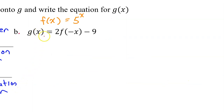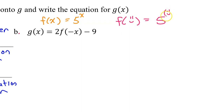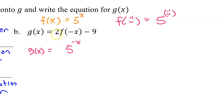Part B: g of x equals 2 times f at negative x minus 9. Remember, f of x equals 5 to the x power, so f at smiley face equals 5 to the smiley face power. Therefore, f at negative x will be 5 to the negative x power. Bringing down the rest of g of x, we have 2 times 5 to the negative x power, and then minus 9.